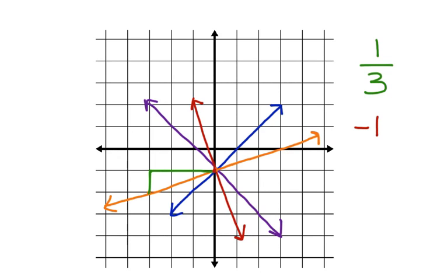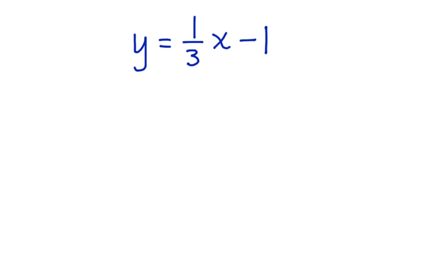Now let's write our equation. y equals one-third x minus one. This is the equation for the orange line.